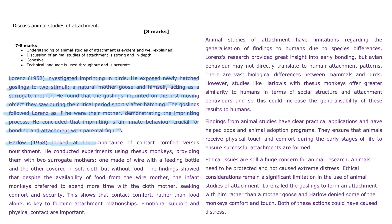Harlow (1958) looked at the importance of contact comfort versus nourishment. He conducted experiments using rhesus monkeys, providing them with two surrogate mothers: one made of wire with a feeding bottle, and the other covered in soft cloth but without food. The findings showed that despite the availability of food from the wire mother, the infant monkeys preferred to spend time with the cloth mother, seeking comfort and security. This shows that contact comfort rather than food alone is key to forming attachment relationships. Emotional support and physical contact are important.